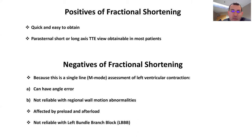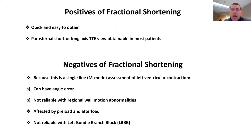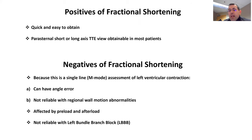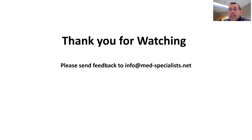What are some of the negatives of fractional shortening? Because this is a single-line M-mode assessment of the left ventricle, you can have angle error. It is not reliable with regional wall motion abnormalities. It's also affected by preload and afterload, and it's not reliable with left bundle branch block. Thank you for watching — please send feedback to the email address listed below.